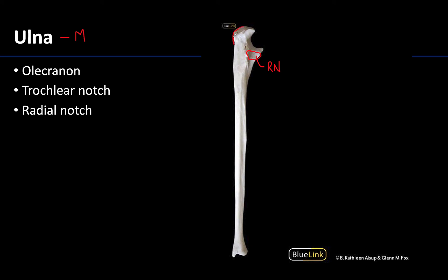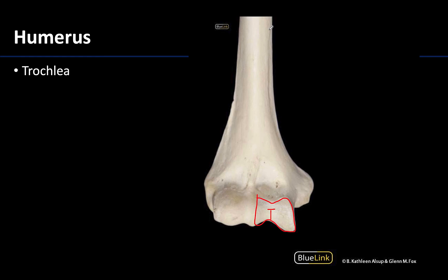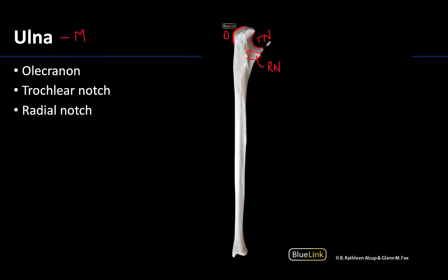The olecranon is a very prominent structure in the proximal and posterior portion of the ulna. It is very robust because it is the distal attachment site of the triceps brachii muscle, which is a very large muscle. Just anterior to the olecranon is the trochlear notch, the semilunar-shaped notch that articulates with the trochlea of the humerus to form the true elbow joint.